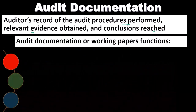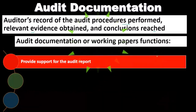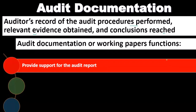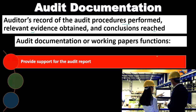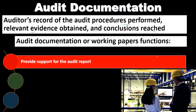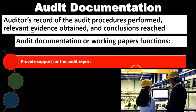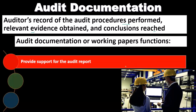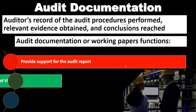Audit documentation, or working papers — these are the functions of the audit documentation. We often call them working papers, which are something that we put together on the audit side of things. We're going to include the working papers as part of our audit documentation, part of our evidence, and part of our support for our opinion.